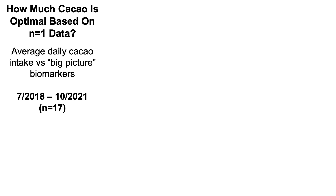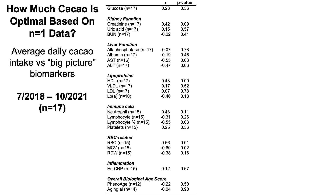There are 22 biomarkers including glucose, three markers of kidney function, four markers of liver function, all major lipoproteins, major immune cells (neutrophils, lymphocytes, percentage of lymphocytes, platelets), red blood cells, red blood cell-related measures, inflammation including high-sensitivity C-reactive protein, and overall biological age scores using Levine's phenotypic age and aging.ai. Homocysteine was excluded due to only six available blood tests.